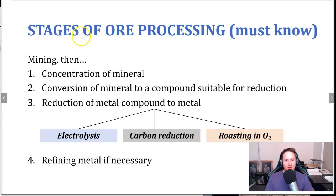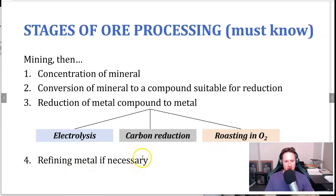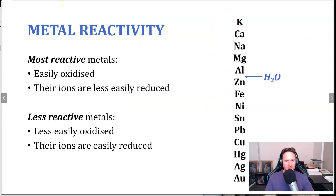The stages of ore processing: first, we need to dig the ore up — that's the mining process. Then there are four chemical steps. Step one is concentration of the mineral. Step two is conversion of the mineral to a compound suitable for reduction. Step three is reduction — the most complicated step — which has multiple methods: electrolysis, carbon reduction, and roasting in oxygen. Different metals use different reduction methods. Step four is metal refining if necessary to increase purity. Which reduction method is used depends on the metal's position in the reactivity series, which is referred to again and again.